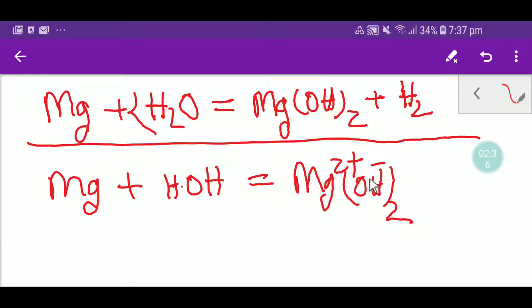So these two hydroxyl ions must come from water, so I have to put here two. If I put here two, then number of two hydrogen ions means one molecule of hydrogen.